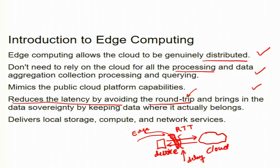Edge computing also brings data sovereignty by keeping the data where it belongs. Data sovereignty is an important concept in security. For example, many government organizations, hospitals, or personal data situations — people do not want data sent to the cloud for fear that personal identification or personal data will be disclosed. To protect data sovereignty, the data should remain at the source itself, and edge computing enables this by not sending data to the cloud while still performing all computation very close to the source.